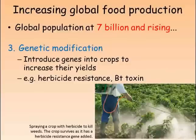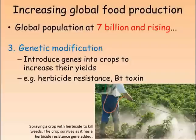We've looked in other videos at how genetic modification can be used to introduce genes into plants that will help to increase yields — for example, herbicide resistance so that the farmer can use a spray to remove weeds without damaging the crop, and introducing the Bt-toxin gene so that pests are killed without needing to use pesticide sprays that also damage natural predators. In the future, it's likely that more genetically modified crops will be grown. These three strategies together will need to meet the rising demands for food production.